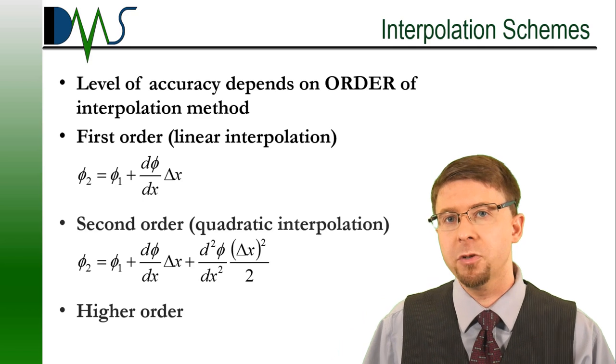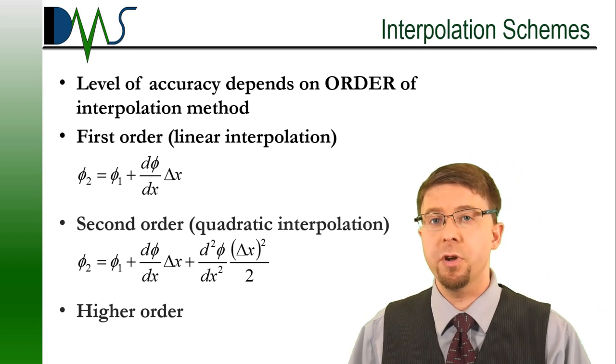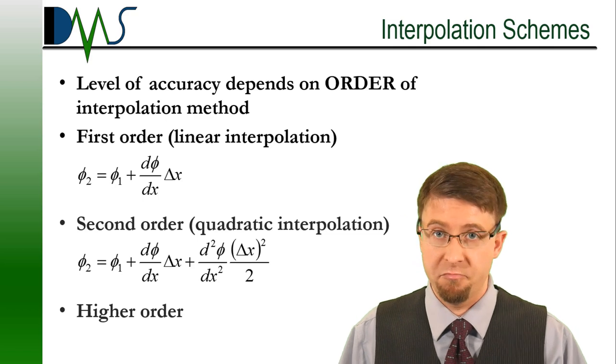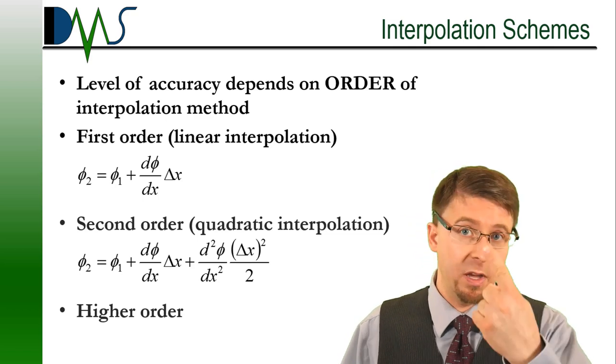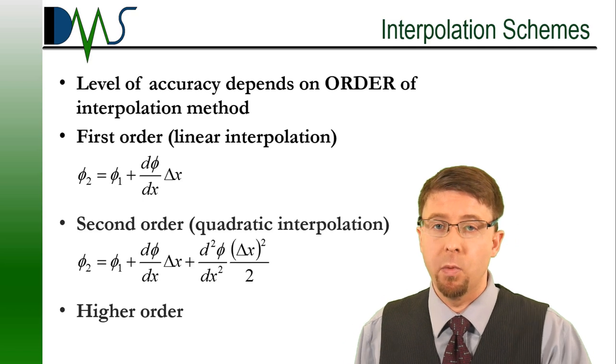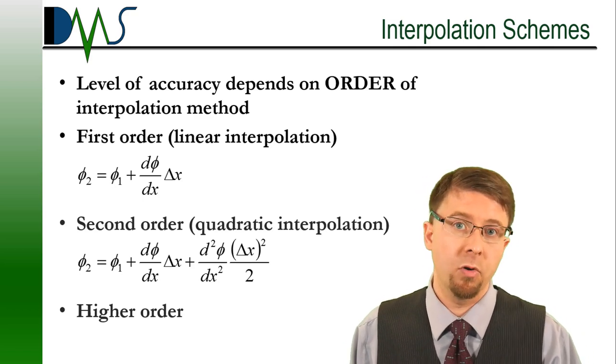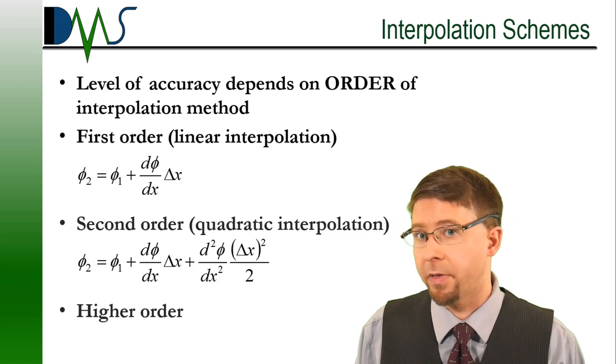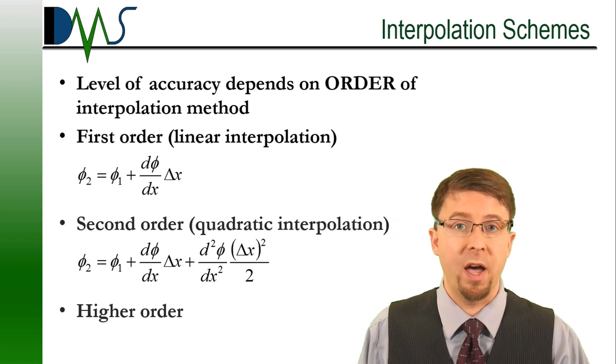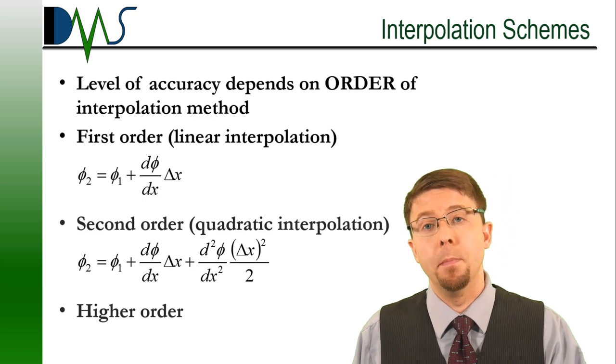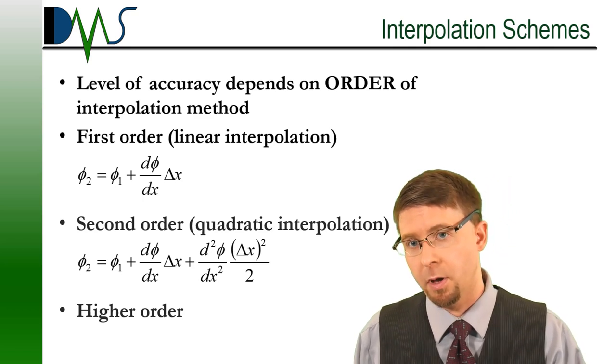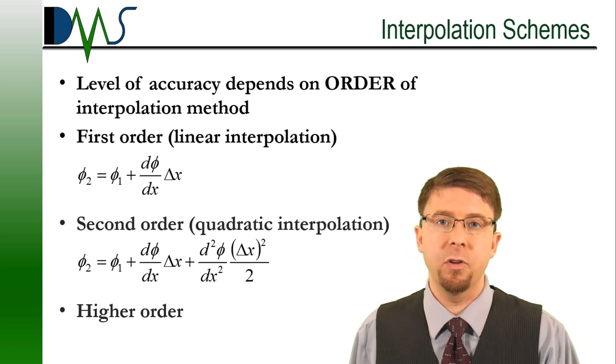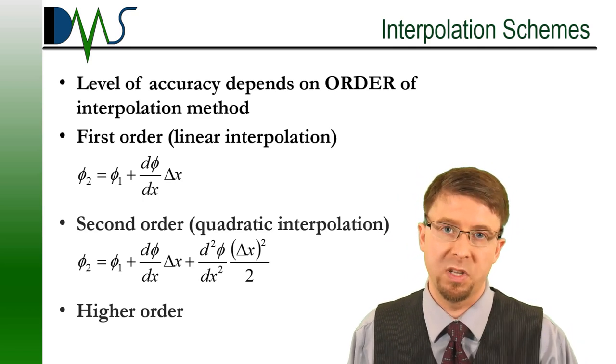And so we start with the basics. First order interpolation. Linear interpolation. A straight line from one point to the next. That's pretty simple. We can get a first order derivative out of that. Then we go one step up. Second order quadratic interpolation. That's good. Now we can get a second order derivative out of that. You could theoretically go to higher order derivatives. Most solvers don't. They actually become pretty unstable at higher order derivatives. So most of the time, your choice is between first order or second order.